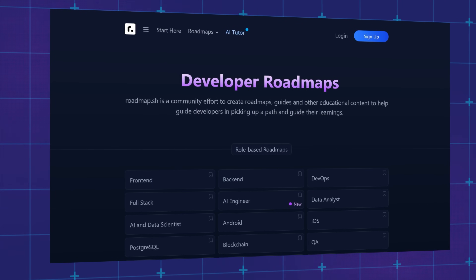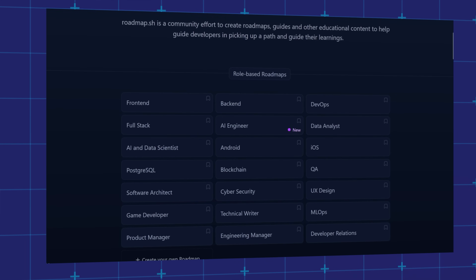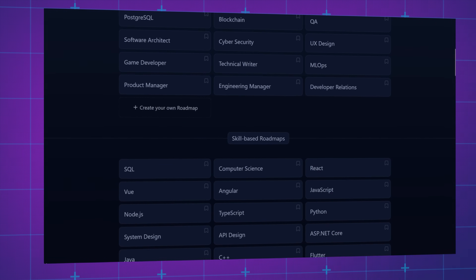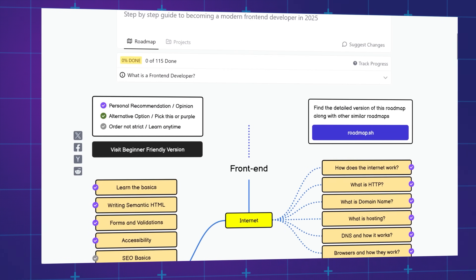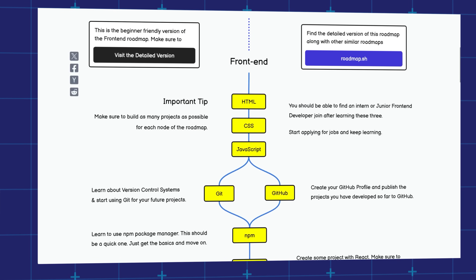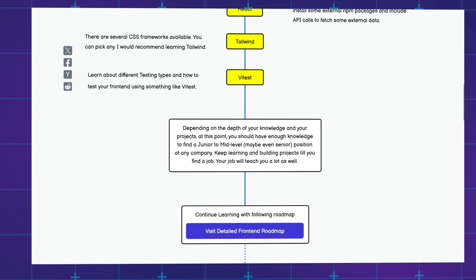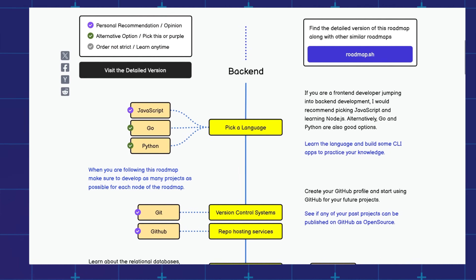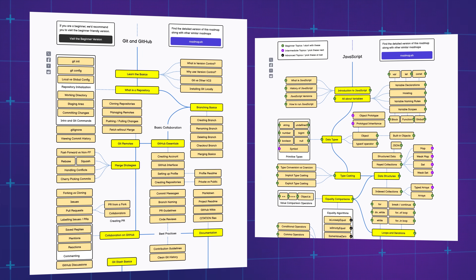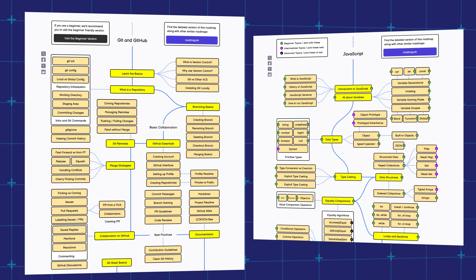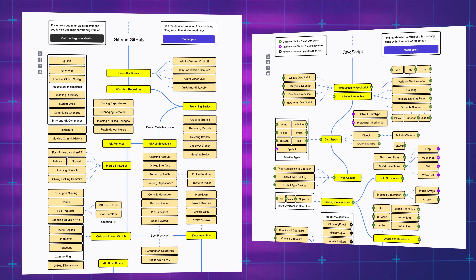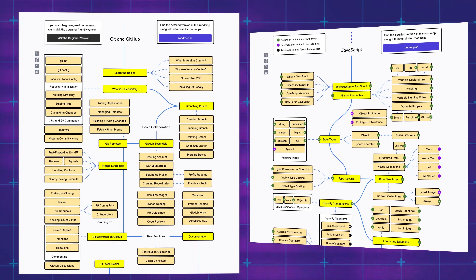That's the simple beginner roadmap for web development. If you need more detail on what to learn in back-end or front-end, I highly recommend Roadmap.sh, which was really helpful when I was creating this guide. They have official roadmaps for front-end and back-end development, including beginner-friendly versions so you can see the overall bird's-eye view without getting caught up in all the details. They also have detailed roadmaps for specific skills like Git and GitHub, JavaScript, and more.